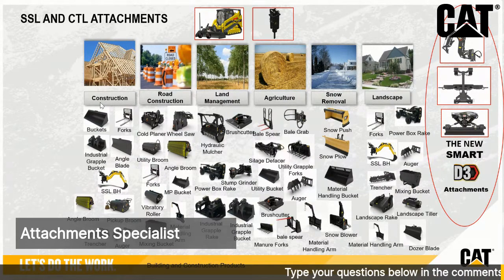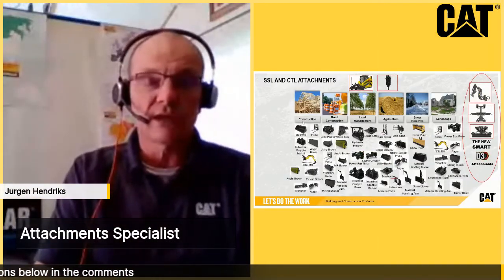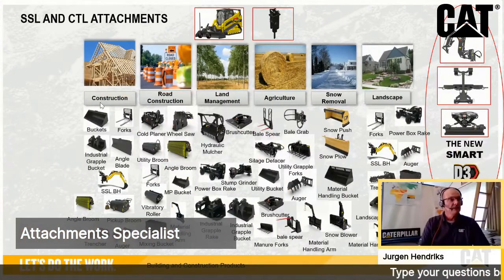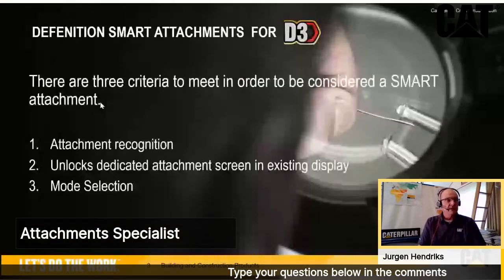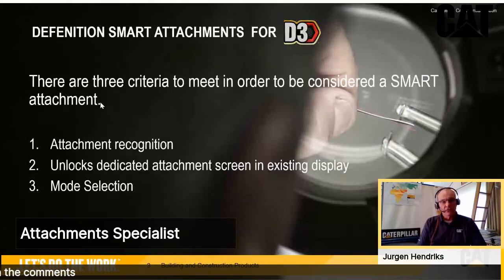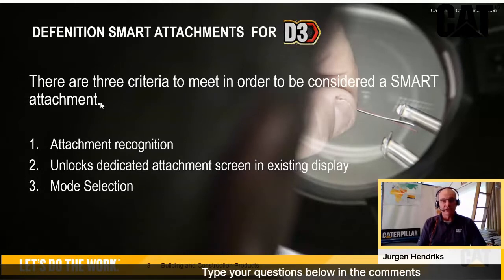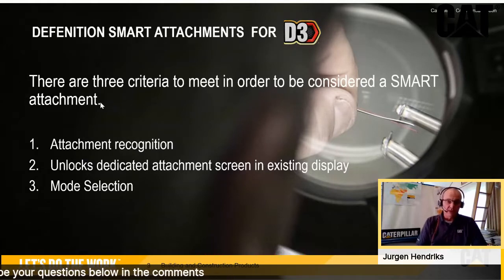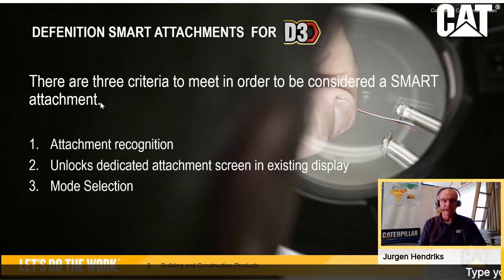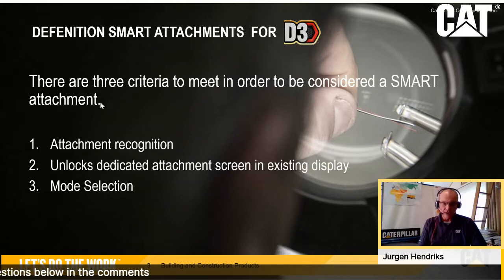Today I'm not going to go too far into the content of the tool itself. I'm going to explain what a smart attachment is so you understand how to recognize one. The definition of a smart attachment has three criteria to meet. First, as soon as you connect a work tool to a skid steer loader or compact track loader, there should be attachment recognition. Second, the attachment when connected to the machine should unlock a dedicated screen in the machine display. And third, once the screen is unlocked, you should have the possibility to choose a mode selection.